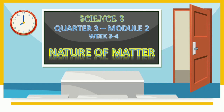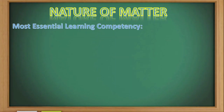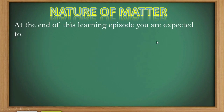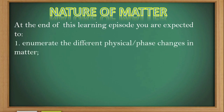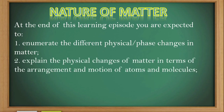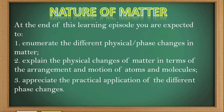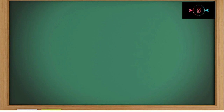For today's episode, we will be learning about the nature of matter. The most essential learning competency is to explain the physical changes in terms of arrangement and motion of atoms and molecules. You are expected to: number one, enumerate the different physical or phase changes in matter; number two, explain the physical changes of matter in terms of the arrangement and motion of atoms and molecules; and number three, appreciate the practical application of the different phase changes.